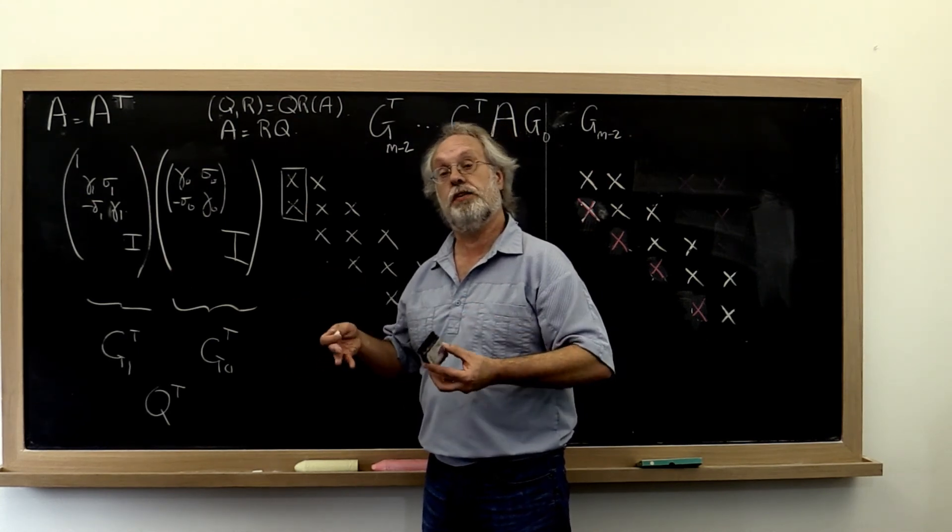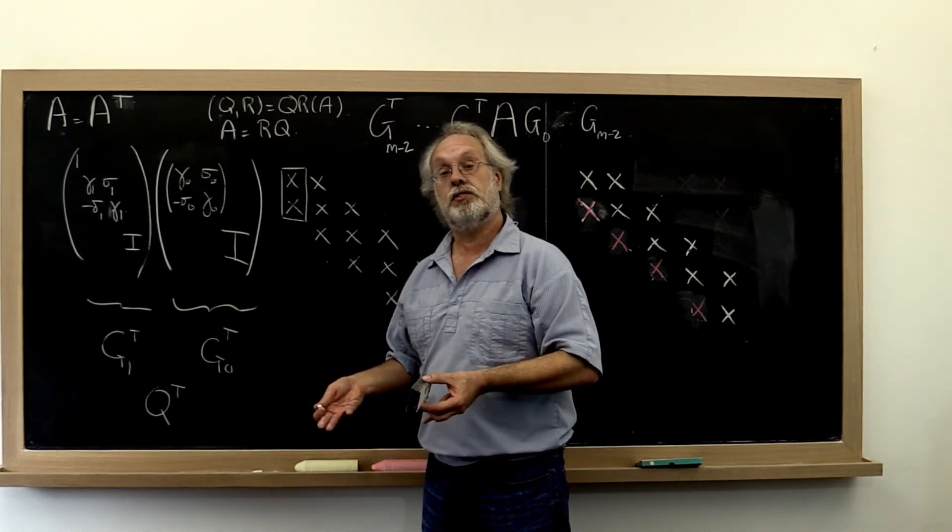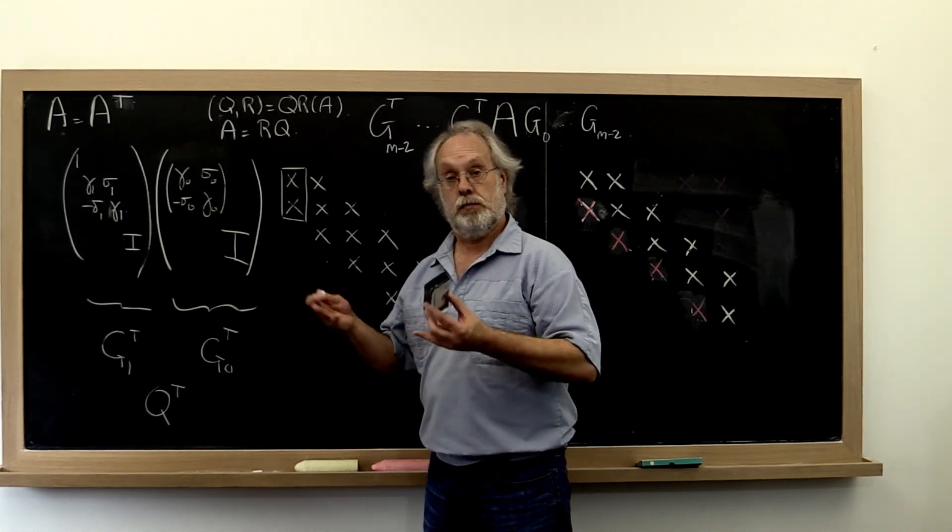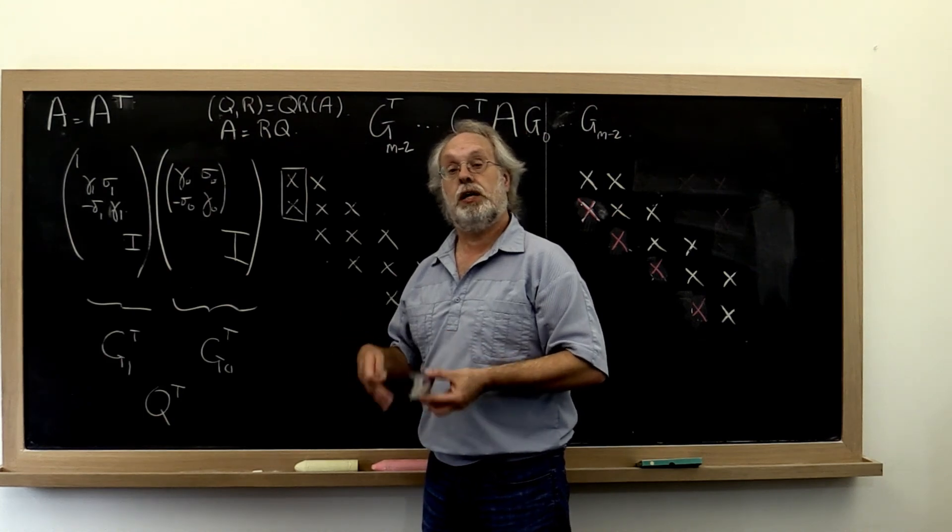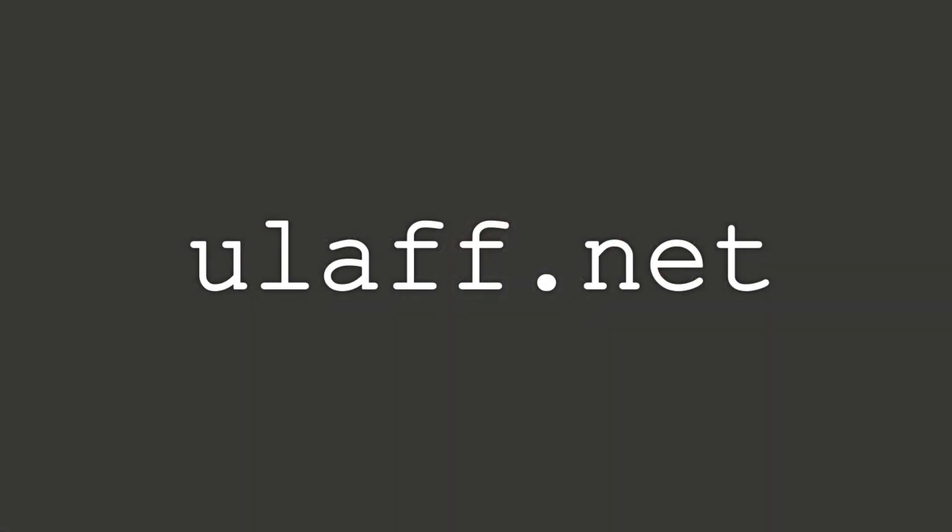So really what we've done is we've taken something that was order m cubed per iteration down to something that's order m squared per iteration. Because typically we are interested in those eigenvectors. And that's it for this whole choice. Thank you all for checking for that.